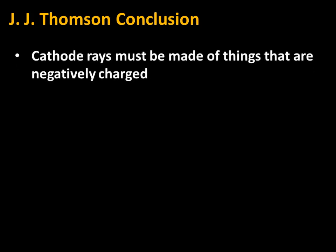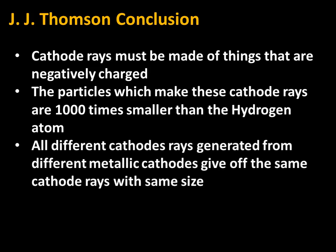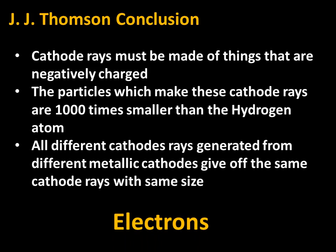Thomson's first conclusion was that cathode rays must be made of particles that are negatively charged. His second conclusion was that the particles which make up cathode rays are a thousand times smaller than the hydrogen atom, which is the smallest atom. He also noted that particles generated from different metallic cathodes give off the same cathode rays with the same properties. On the basis of these conclusions, he identified these cathode ray particles as electrons.